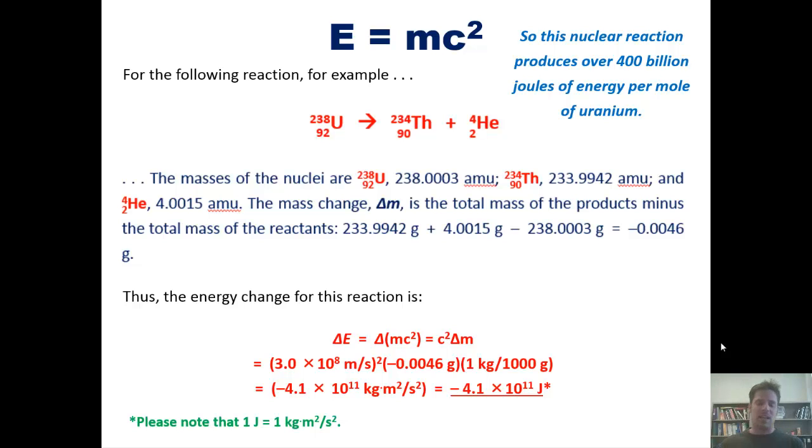The take home from this is that, once again, because of this equation, energy equals mass times the speed of light squared, mathematically speaking, energy and mass are interconvertible. However, because the speed of light is such a large number and you're squaring that number, the amount of mass required to produce a tremendous amount of energy is very small.